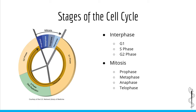The cell cycle can be broken down to two major phases: interphase and mitosis. Interphase and mitosis can be further broken down to various sub-phases as well. An easy way to conceptualize and memorize the cell cycle is to picture a new cell which has just freshly divided from a parent cell.